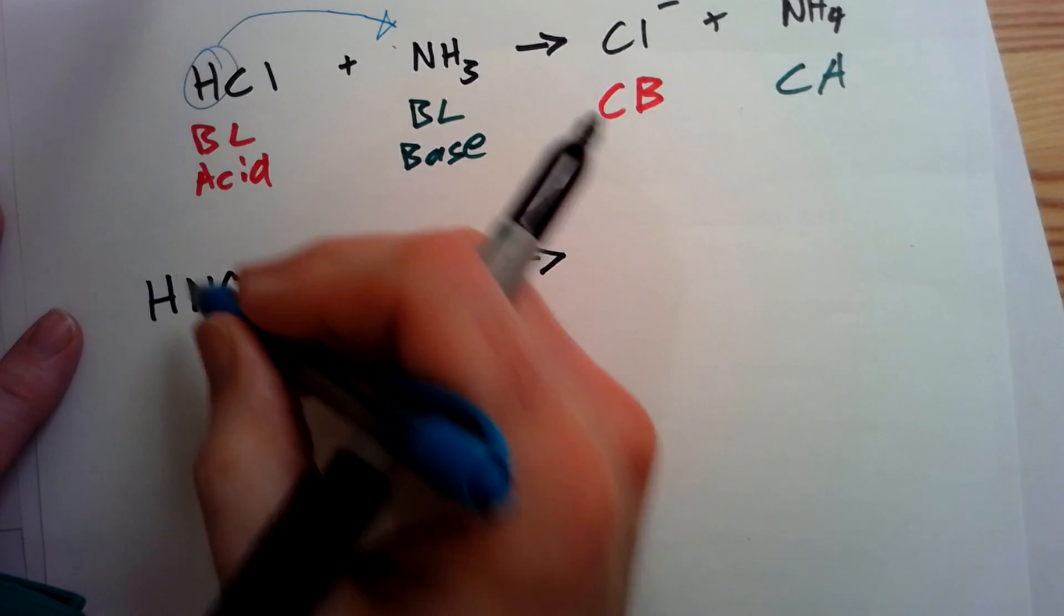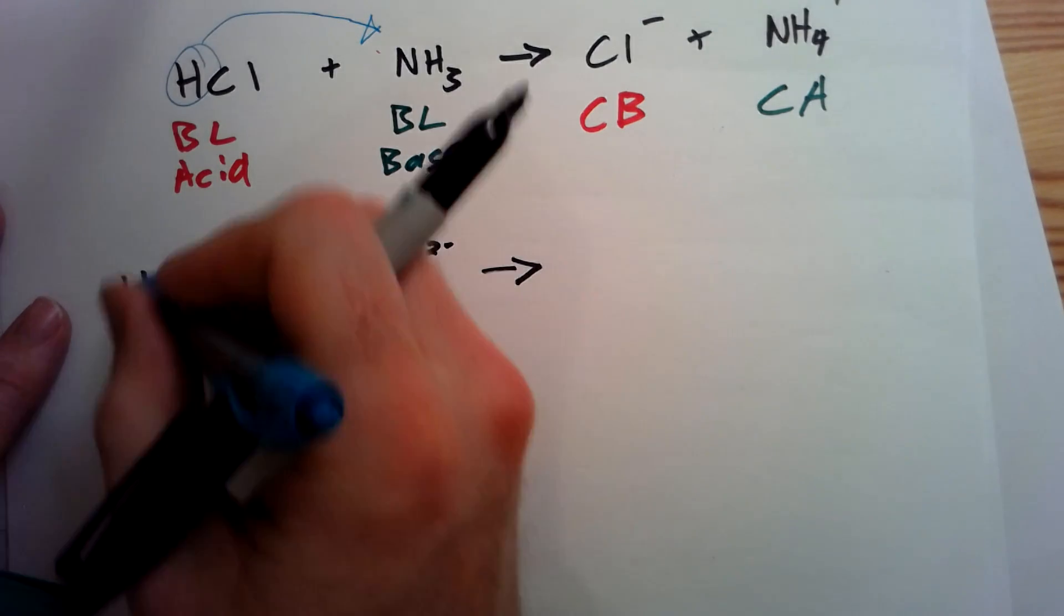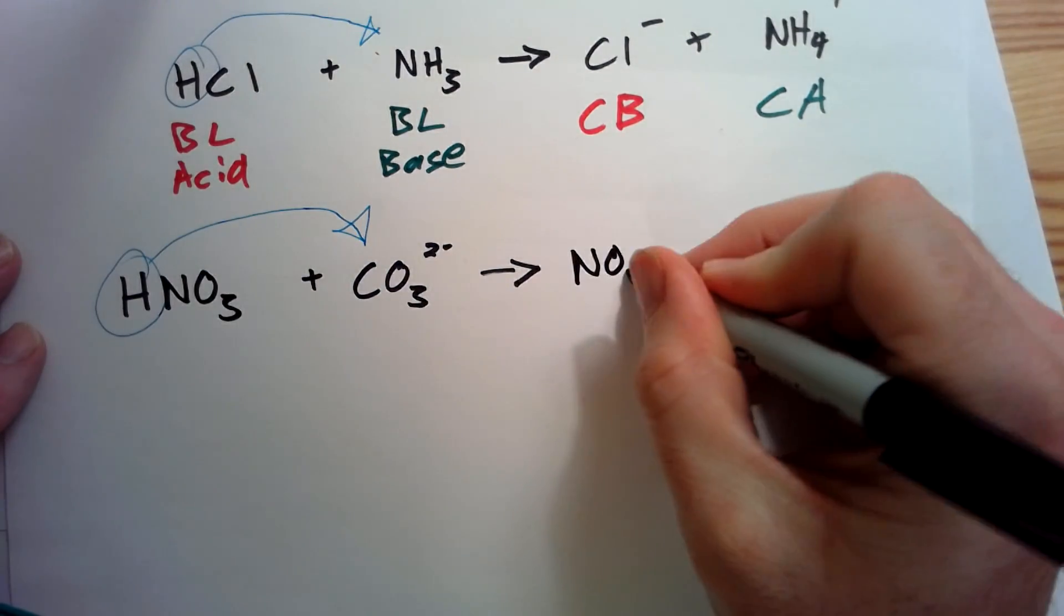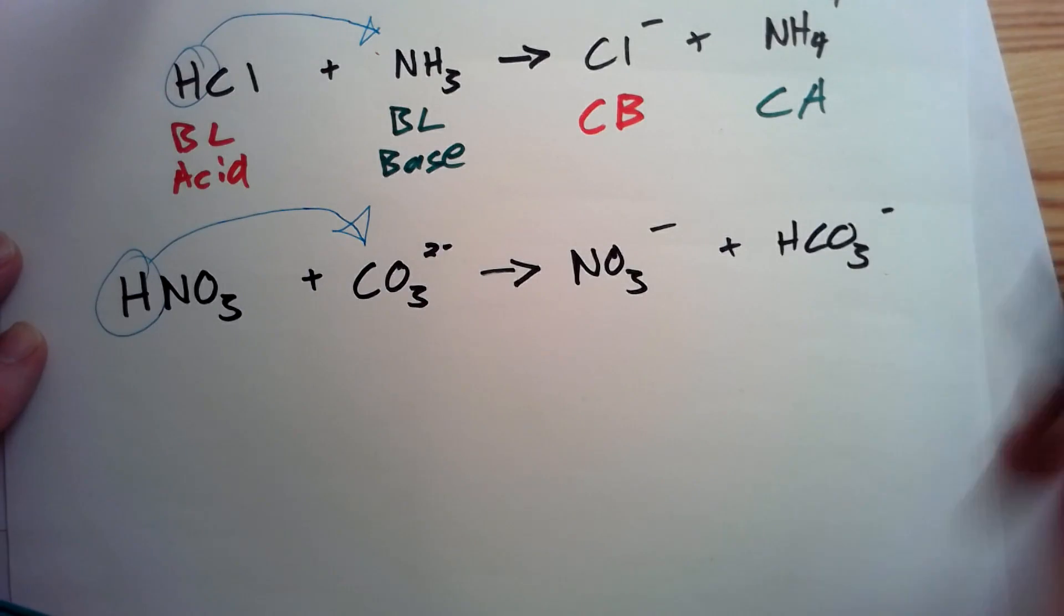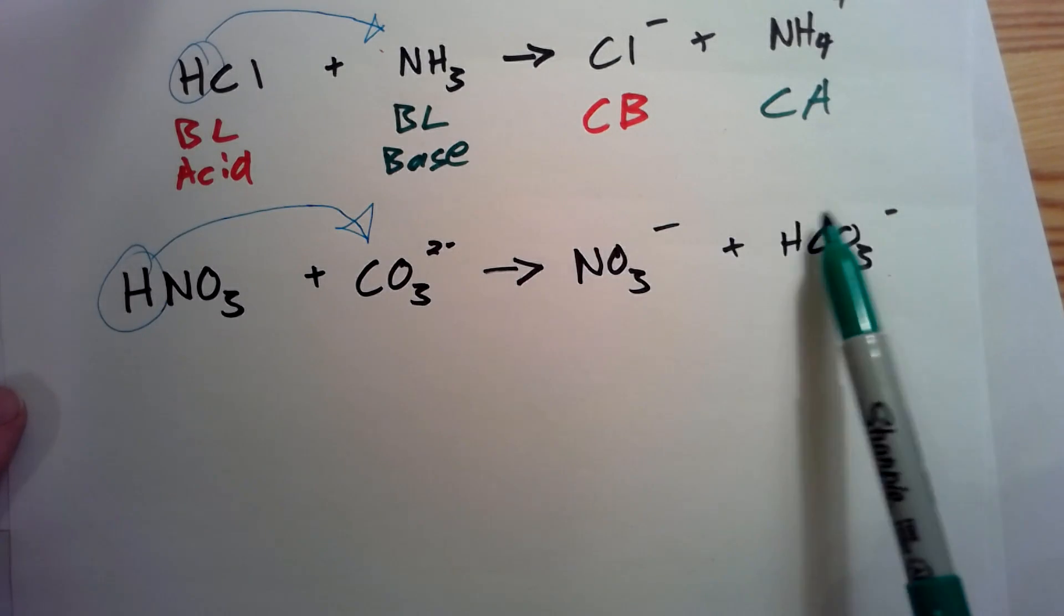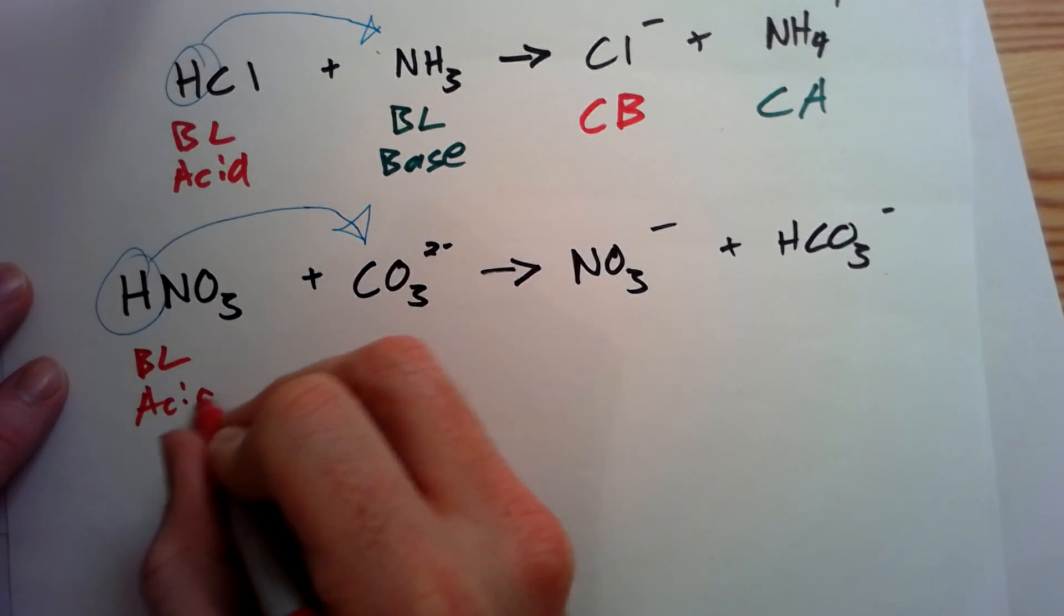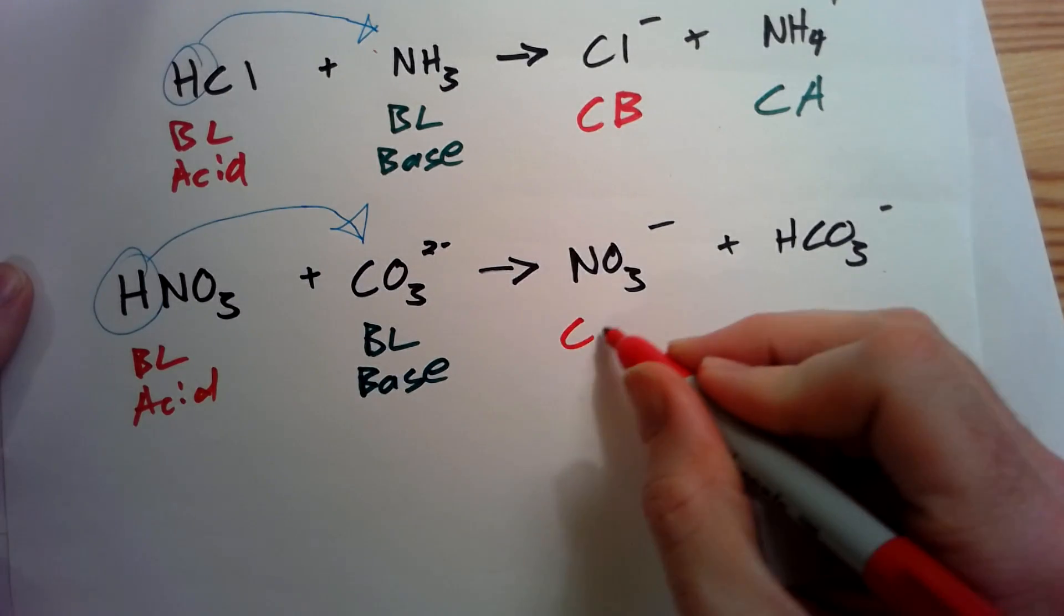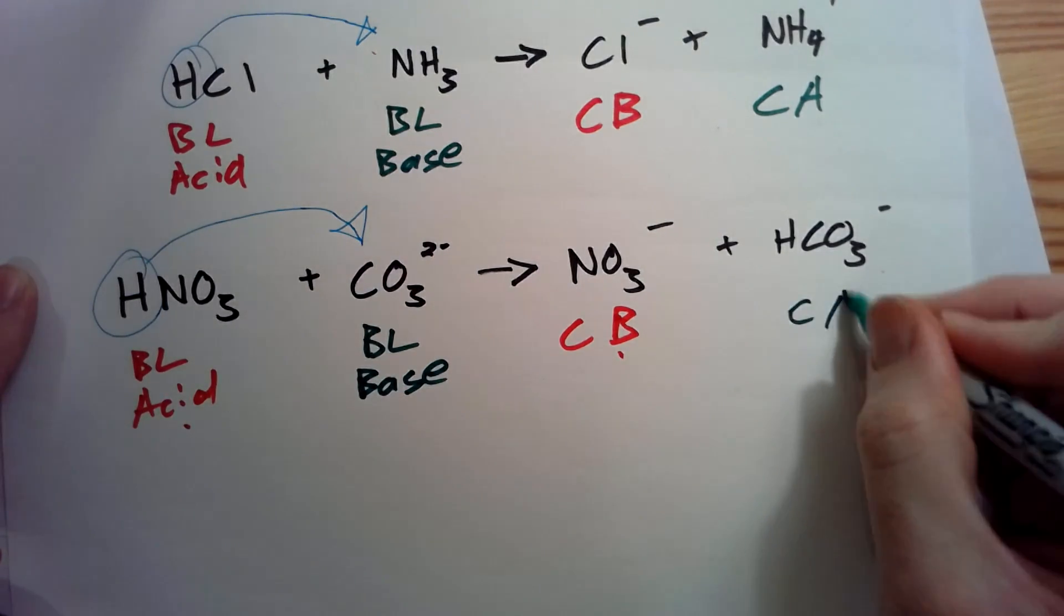So we only have one proton, so big chance what you can do. Try to write this out, see if you can get the charges the same. Welcome back. Here we go. We have this. Now a proton is given to here, and we have NO3- and HCO3-. Notice how there was a 2- on the left, and there's a minus and a minus adds up to 2- on the right, so we're still okay. We have the Bronsted-Lowry acid. The Bronsted-Lowry base. The conjugate base. The acid became the conjugate base, and the base became the conjugate acid.